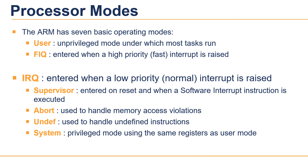The ARM has seven basic operating modes: User mode, which is the unprivileged mode under which most tasks run; FIQ mode, entered when a high priority or fast interrupt is raised; IRQ mode, entered when a low priority interrupt is raised; Supervisor mode, entered on reset and when a software interrupt instruction is executed; Abort mode, used to handle memory access violations; Undefined mode, used to handle undefined instructions; and System mode, a privileged mode using the same registers as User mode.